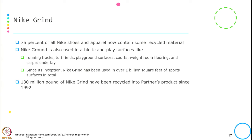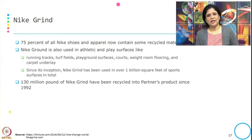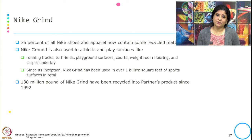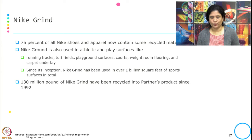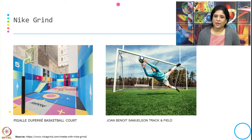70 percent of all Nike shoes and apparel now contain some recycled material, and at least 75 percent of Nike shoes have some recycled material. Nike Grind is also used in athletic and play surfaces like running tracks, turf fields, playground surfaces, courts, weight room flooring, and carpet underlay. Since its inception, Nike Grind has been used in over 1 million square feet of sport surfaces in total, and 130 million pounds of Nike Grind have been recycled into partners' products since 1992. Examples made from Nike Grind include basketball courts and the Samuelson track and field surfaces.